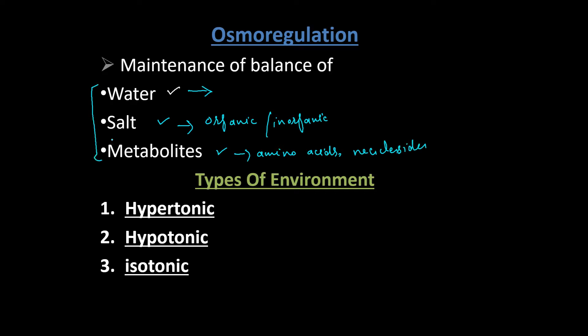The balance of amino acids, nucleosides, and all metabolites is controlled and maintained within the cells through the osmoregulation process.